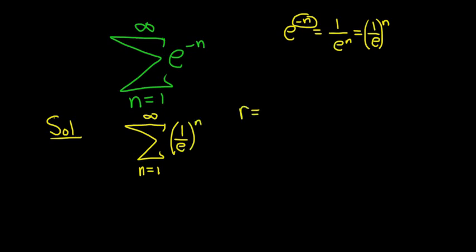r is your common ratio. It's 1 over e. r is always what's being raised to the nth power.